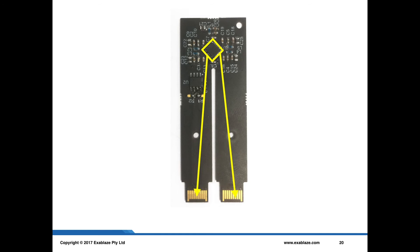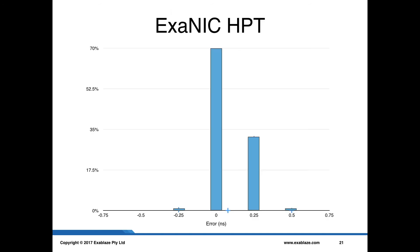So if we run the same experiment that we've been doing, where we send packets and calculate the delta in the timestamps that the packets receive, the ExaNIC HPT returns the following results. You can see here a very large bucket is back on zero at 70% of the value. And if we look at the average, we get an average of 0.08 nanoseconds, so very close to zero.